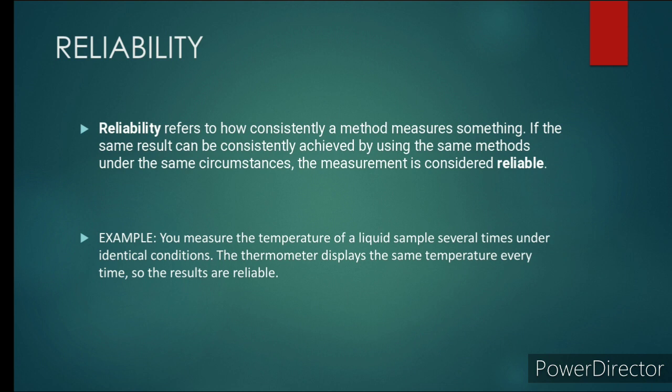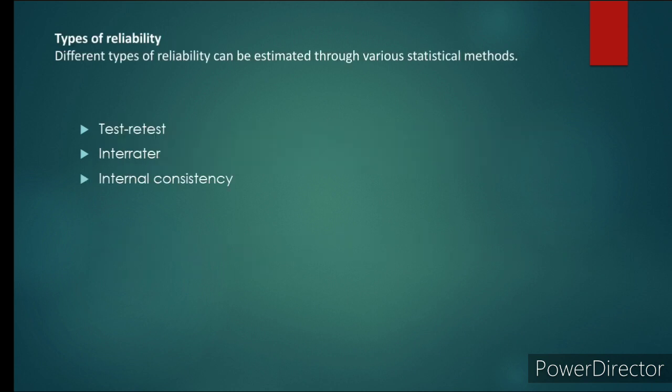Reliability is the consistency of a test in what it intends to measure. For example, you measure the temperature of a liquid sample several times under identical conditions. The thermometer displays the same temperature every time, so the results are reliable.